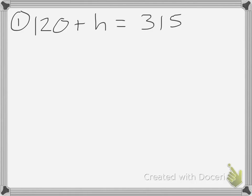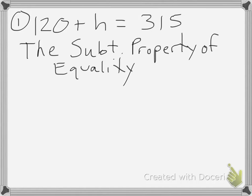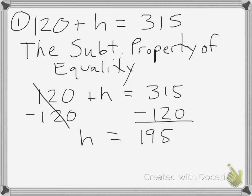If we take a look at this first example, we have 120 plus h is equal to 315. In this problem, we will be using the subtraction property of equality because we are performing the same operation — subtraction — on both sides of the equation in order to isolate the variable. When I subtract 120 from both sides, h is left all by itself, and I can see that h is equal to 195. So that is an example of the subtraction property of equality.